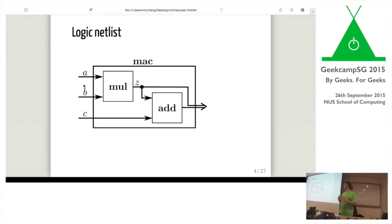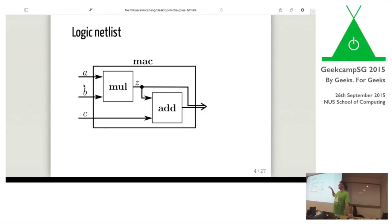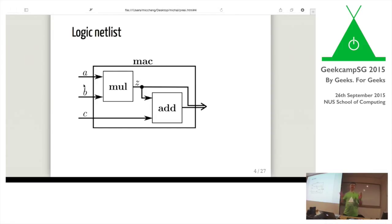We can think about logic within the computer as composed of so-called netlists — a network where we have some inputs that basically give or discharge an electric signal on the wire. In this case, each of the numbers is a 32-bit number, so A and B are 32 bits — 32 wires each — and C is also 32 bits. They go into a black-box component and give an output: either multiplication or addition. Nowadays we have compilers that take this level of description and generate either the silicon description or allow us to upload this network to an FPGA.